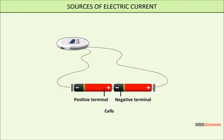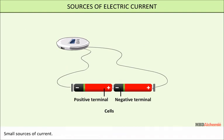Sources of electric current can be divided into two types: small sources of current and bigger sources of current.